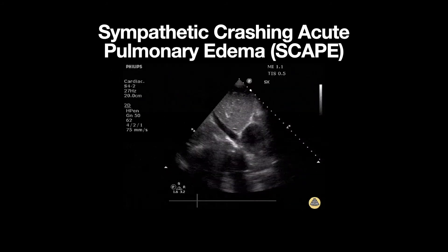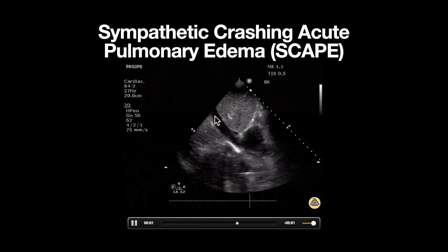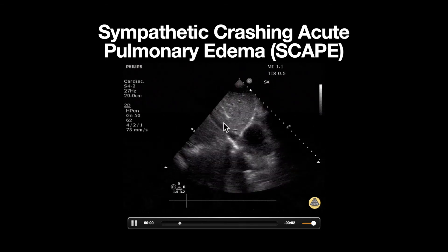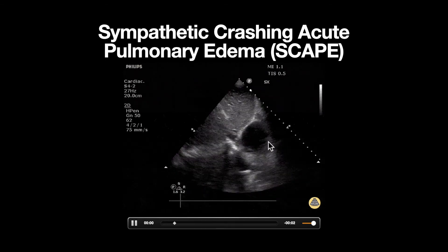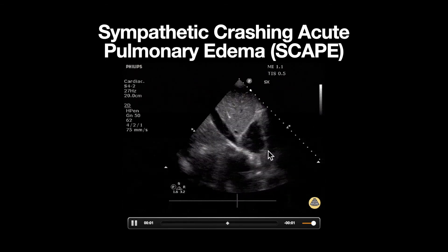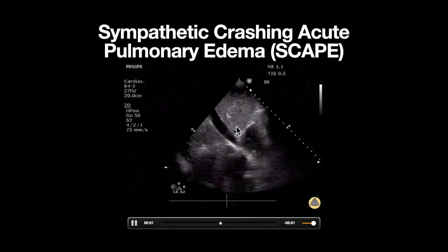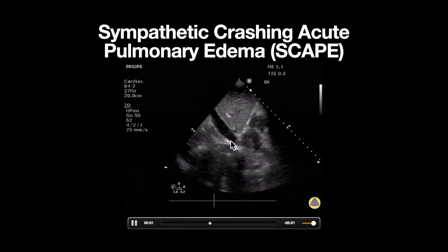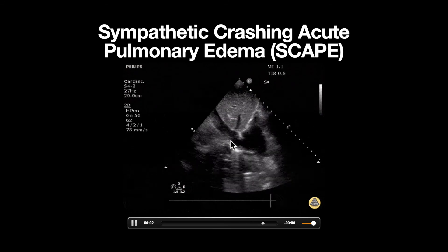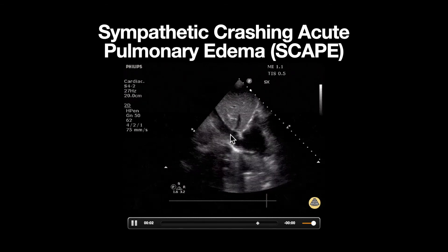Lastly, let's look at the IVC. This is a long axis view of our IVC, which can be seen here diving through the liver and connecting to our right atrium. Our hepatic vein can be seen here. Overall, this IVC does not appear significantly plethoric, and there also appears to be some respiratory variation.